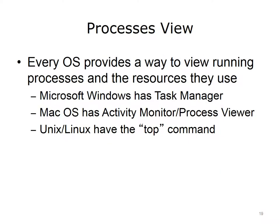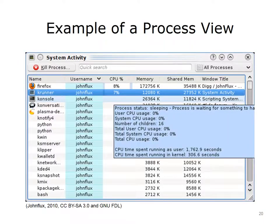Every OS has a way to view processes that are running. In Microsoft Windows, it is the Task Manager. The Mac OS has the Activity Monitor, or Process Viewer. In Unix and Linux, the top command provides a list of processes. This view shows information such as the names of all the processes, who started the process, and how much CPU time and memory are being used by each process. This screenshot shows the Process Viewer in the Linux OS that runs K Desktop Environment, or KDE. The Process Viewer is started by typing the top command at the prompt.